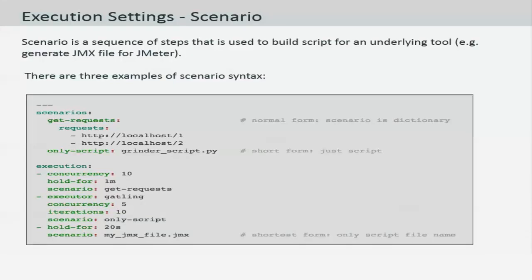If you see the example on the screen we've got two scenarios. The first one is the get request scenario and the second one is only script. For the first scenario the request will be made from within the Taurus script on the basis of the execution settings defined. If you see the only script option it will call an existing script but you can still provide any configuration settings if you would like to.